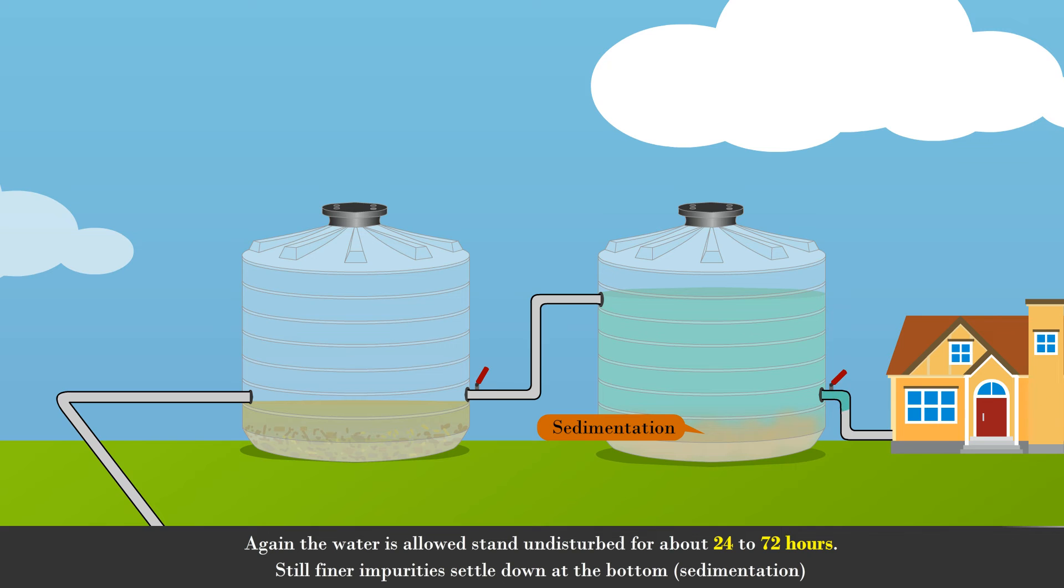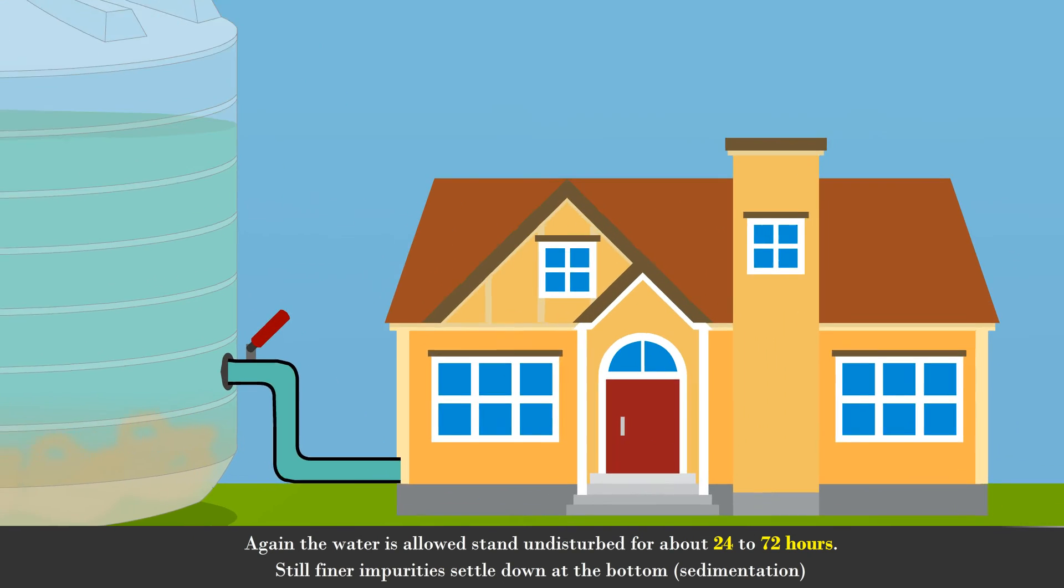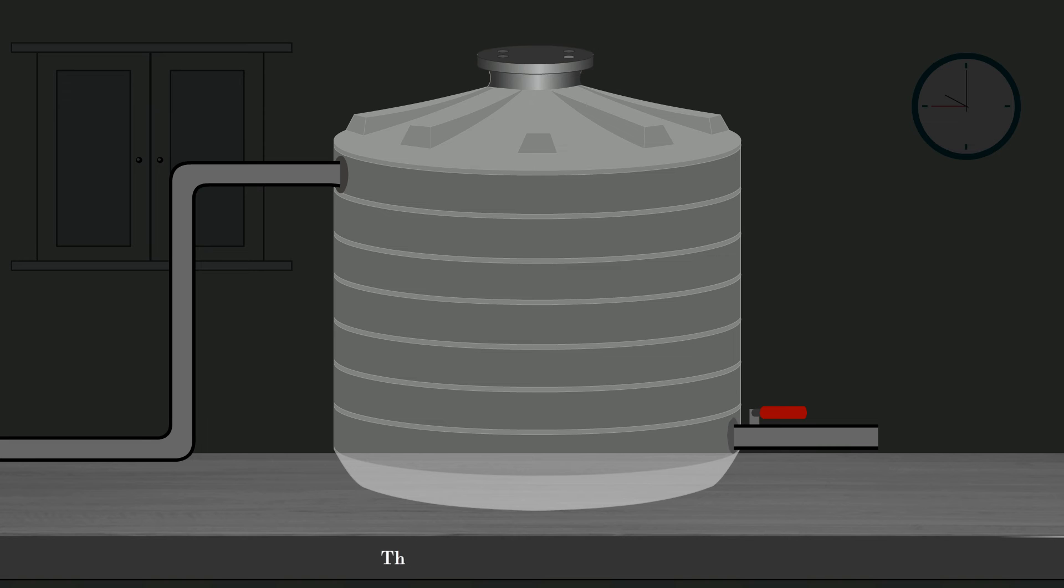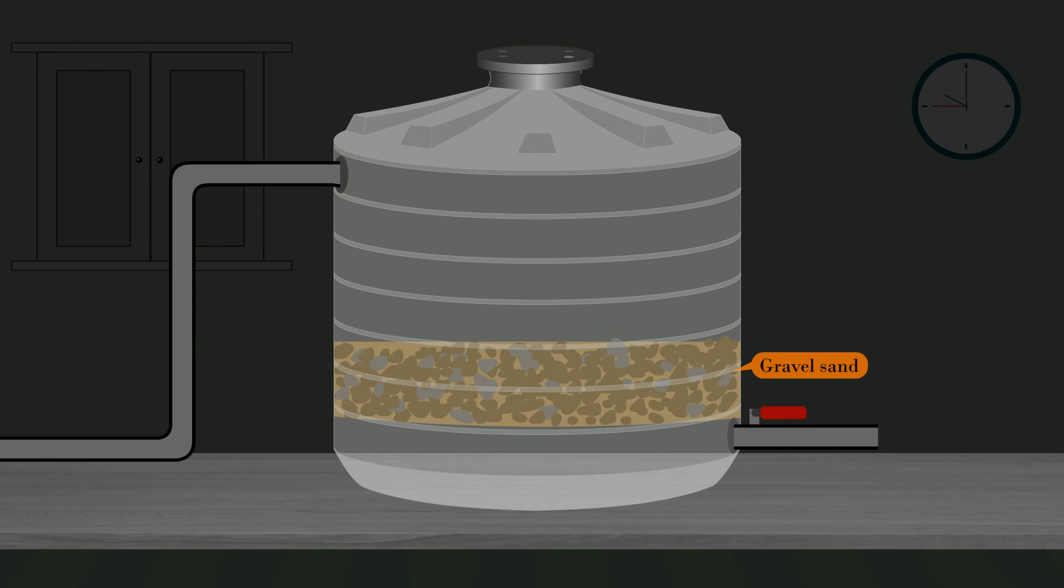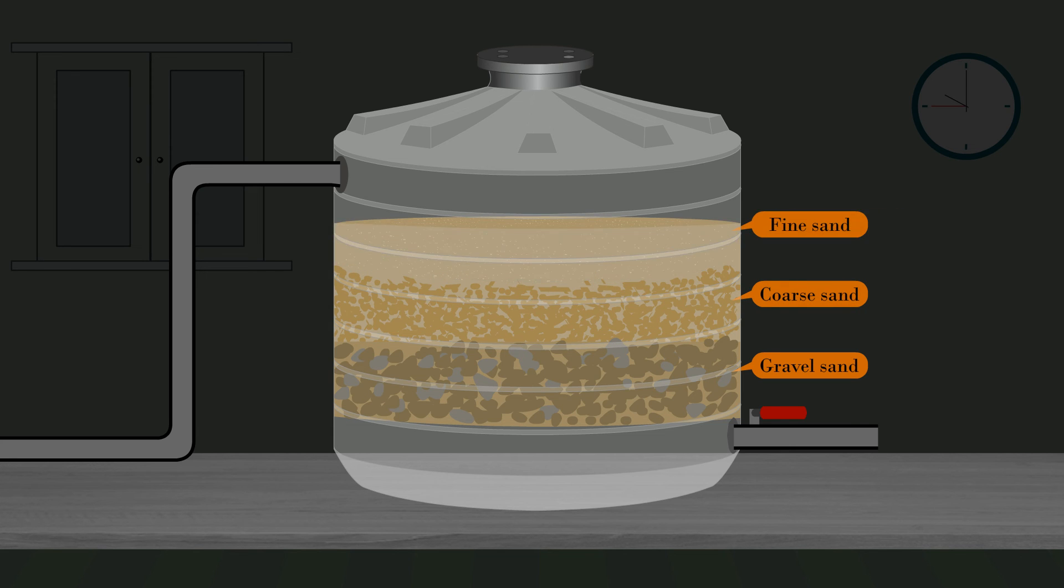The supernatant water is sent to filtration tank. The sand filter consists of three layers. The lowermost is gravel sand layer. The middle layer is made up of coarse sand, and the upper layer is of fine sand.